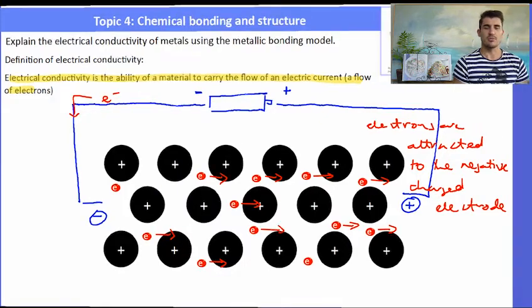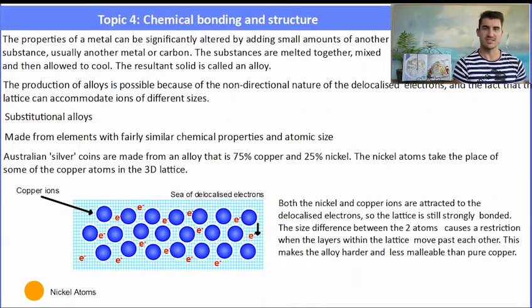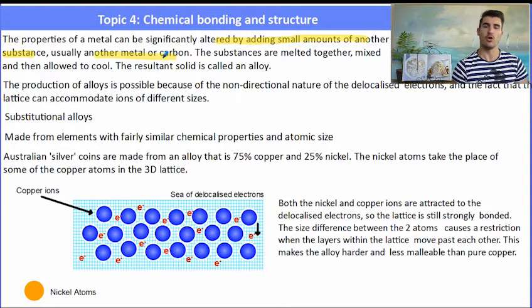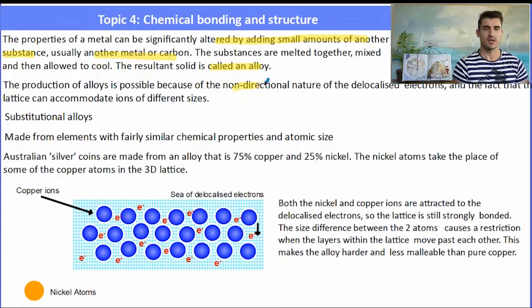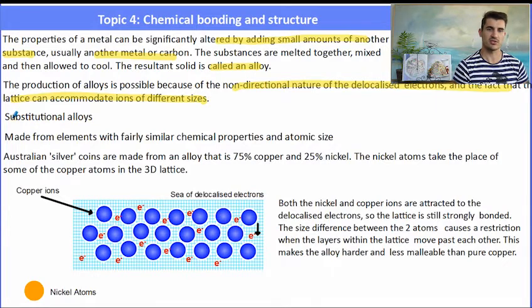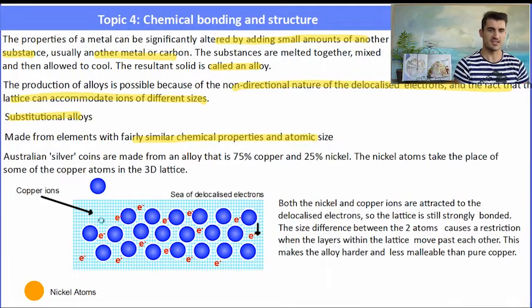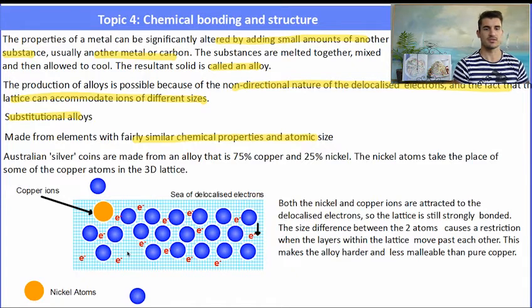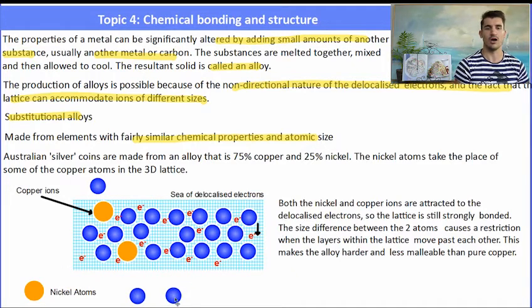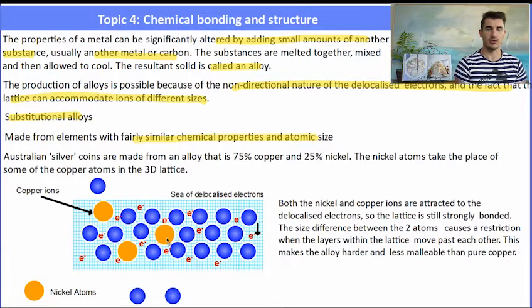We also need to talk about alloys. Now the property of a metal can be significantly altered by adding small amounts of other substances, either another metal or carbon for instance. Whenever we do this we've made what we've called an alloy. Now the production of alloys is possible because of the non-directional nature of the delocalized electrons and the fact that the lattice can accumulate different ions, different sizes of ions. So for instance the substitutional alloy between copper and nickel is where some of the copper atoms or the copper ions are replaced with nickel ions. And this is what Australian silver coins are made of.